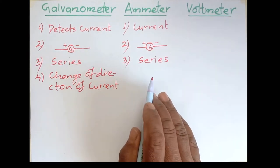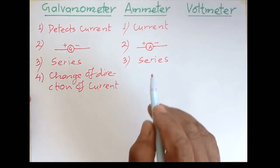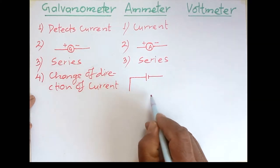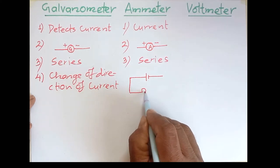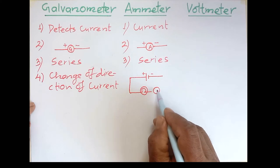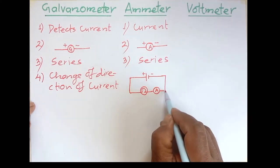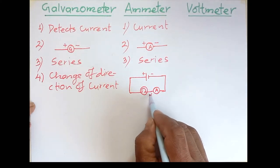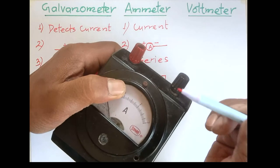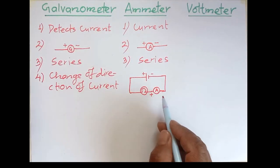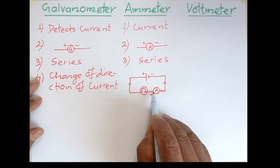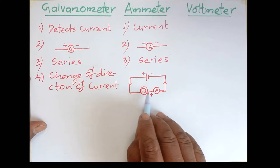All the current which flows in the circuit should also flow through the ammeter, so its resistance must be negligible. For example, if we have a cell lighting a bulb and we want to find the value of current flowing through the bulb, we connect the ammeter in series. The wire from the positive terminal of the cell connects to the plus terminal of the ammeter, and the wire from the negative terminal connects to the minus terminal. The current that flows through the bulb all flows through the ammeter as well.